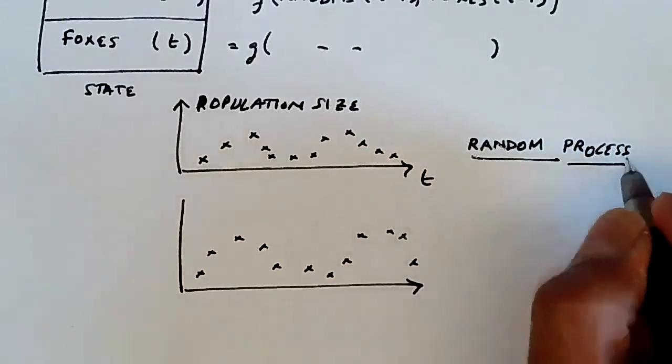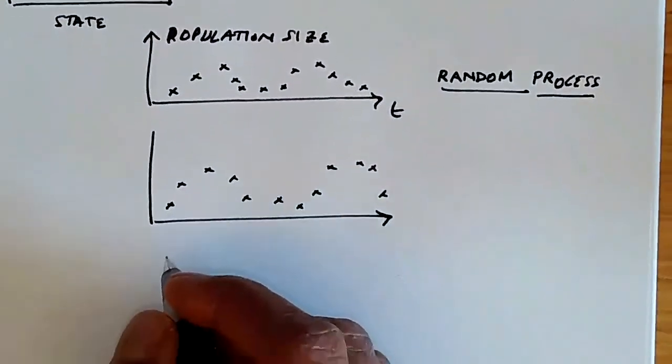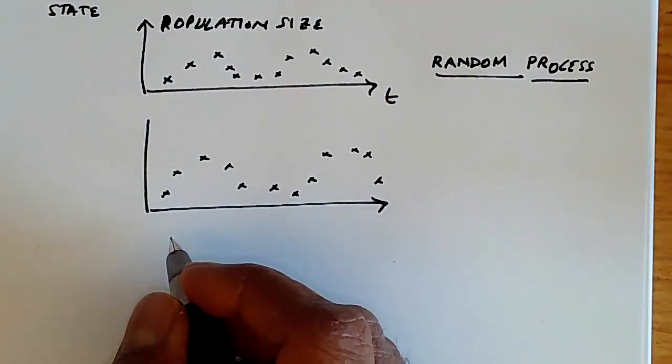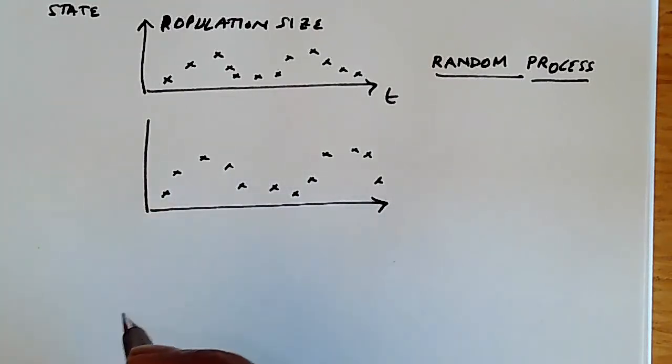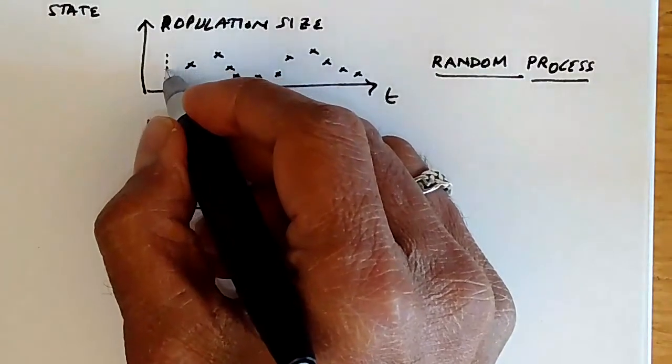What we're seeing over here is essentially two trajectories of the random process. In our discussion of stochastic processes, we can make this very clear. Essentially, what we're saying is that at each point in time,